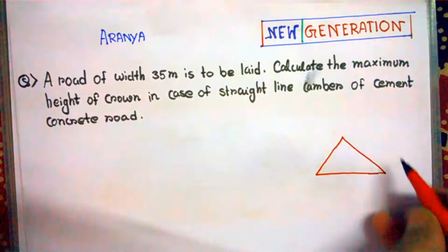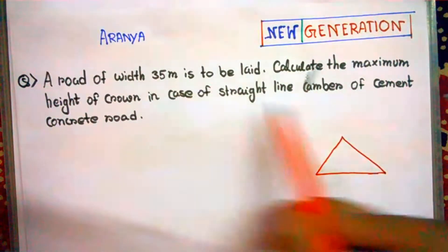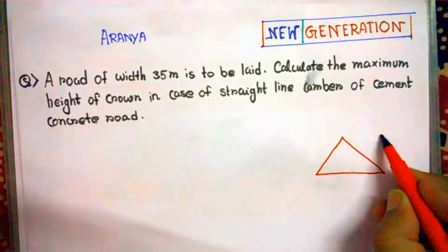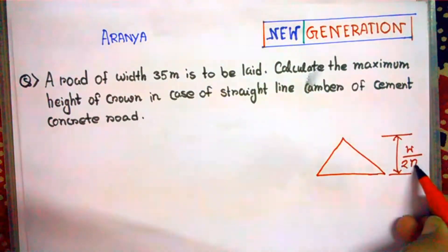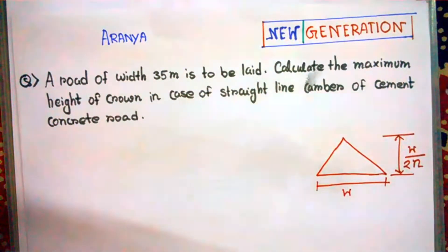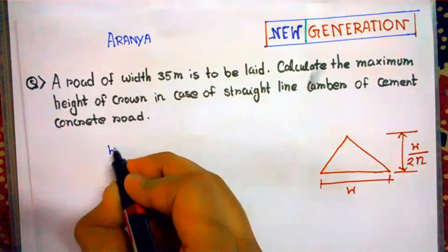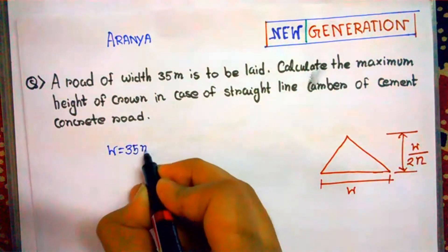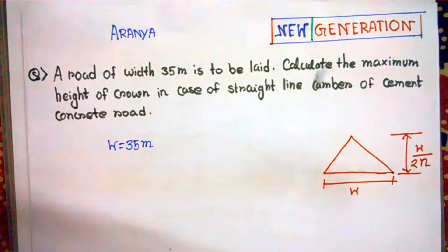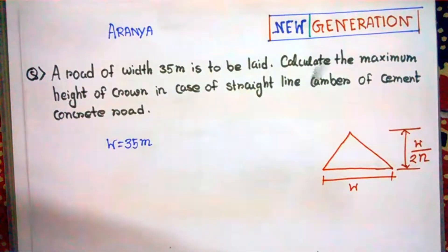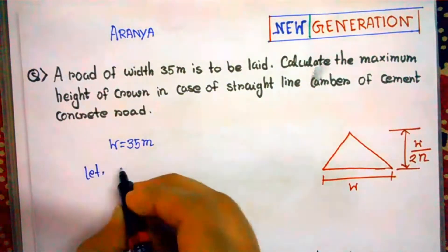This is the image of straight line camber. What they have asked is to calculate the maximum height. For maximum height, we know the formula for straight line camber is w divided by 2n, where w is the width of the road. The road width is 35 meters, so we can write w = 35 meters. They have asked to calculate the maximum height of the crown in case of straight line camber of cement concrete road.